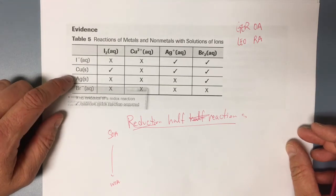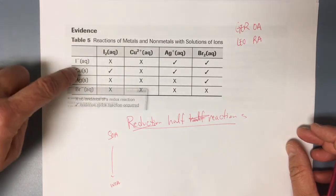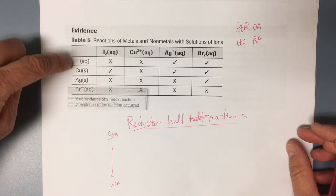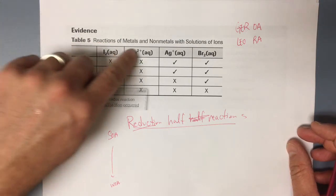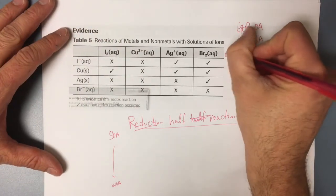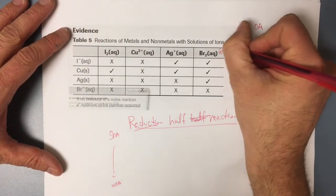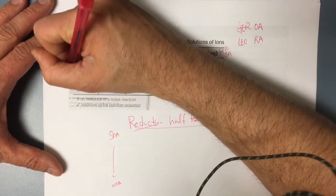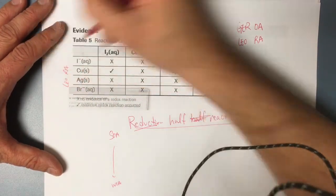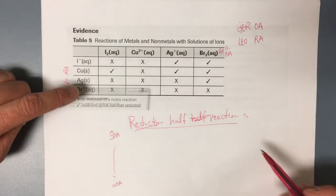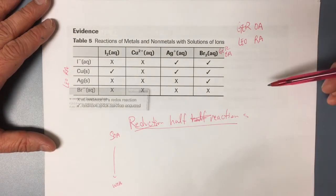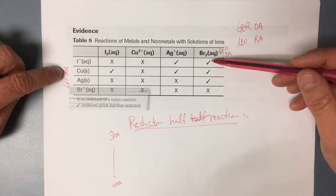The more positive species is going to be reduced, so copper(II) is more positive than copper metal, and iodine is more positive than iodide. So these are my oxidizing agents — they're going to gain electrons and be reduced. The chemicals on the other side are going to lose electrons and be oxidized; those are my reducing agents. I want to look for the oxidizing agent that is most reactive with the reducing agents.